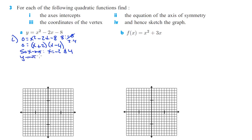The y-intercept is when x is 0, so that gives us negative 8. So negative 8 is our y-intercept, and x-intercepts are at negative 2 and positive 4. Halfway between those is at 1, so x equals 1 is the axis of symmetry — part 2. AOS is x equals 1.